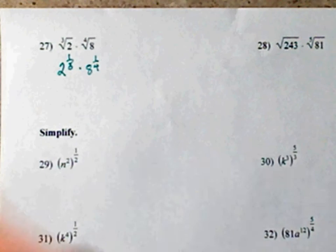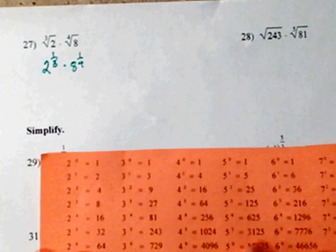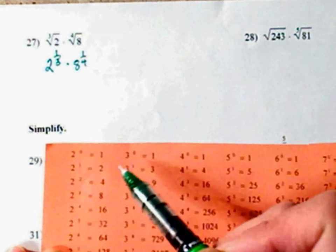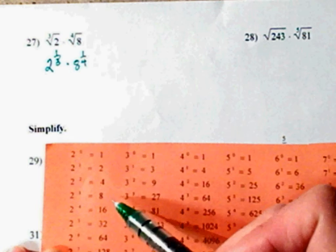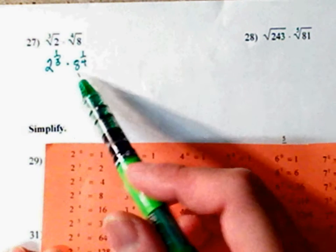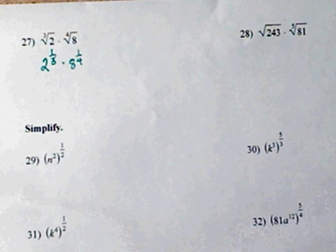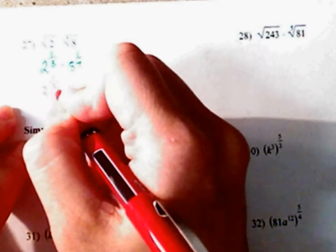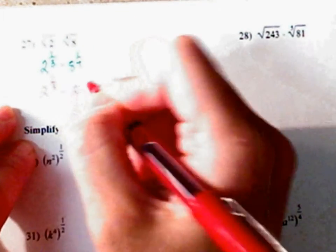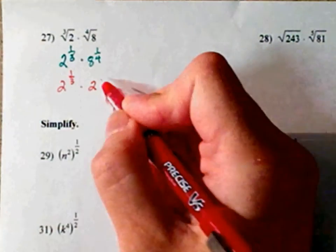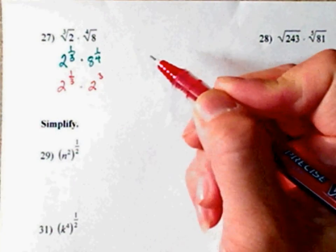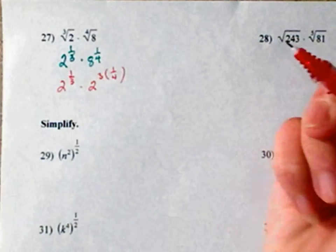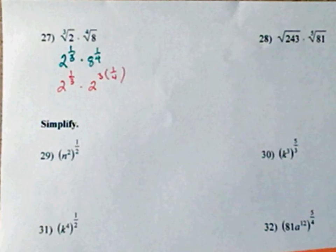Now if you look on your paper, your peach paper, you will see that the base of 2 has a 2 and an 8. So somehow I want to rewrite this 8. This right here is 2 to the 1/3. I'm going to keep it. 2 to what power is 8? 2 to the 3rd power is 8. Then I'm going to bring down my exponent of 1/4.